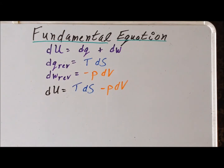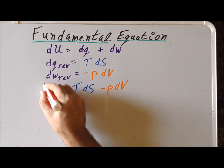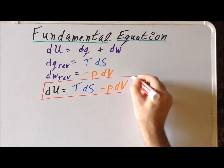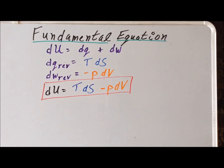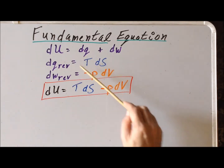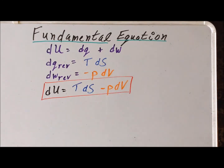This combined form is known to Atkins as the fundamental equation. It is sometimes called the combined equation because it incorporates information from both the first law and, particularly, from the second law.